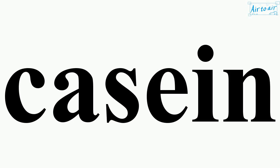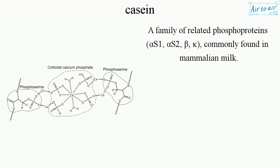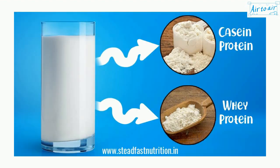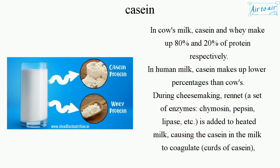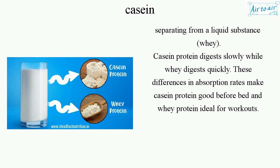Casein is a family of related phosphoproteins — alpha-s1, alpha-s2, beta, kappa — commonly found in mammalian milk. In cow's milk, casein and whey make up 80% and 20% of protein respectively; in human milk, casein makes up a lower percentage. During cheese making, rennet — a set of enzymes including chymosin, pepsin, and lipase — is added to heated milk, causing casein to coagulate into curds, separating from the liquid whey. Casein protein digests slowly while whey digests quickly, making casein good before bed and whey ideal for workouts.